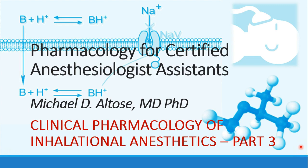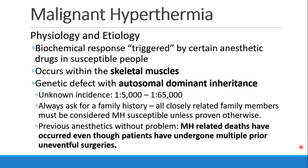Hi, this is Michael Altos, and we are finishing our discussion of Clinical Pharmacology of Inhalational Anesthetics — this is Recording Part 3. Now we're going to talk about malignant hyperthermia. Malignant hyperthermia is a biochemical response triggered by certain anesthetic drugs in susceptible people. It occurs in the skeletal muscles, and it's a genetic defect with autosomal dominant inheritance.